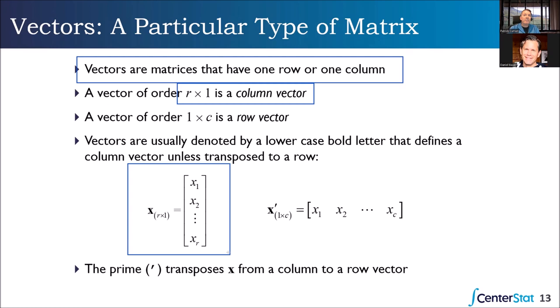Lowercase bold x indicates a column vector — multiple rows, one column. Why would you ever encounter that? Think about multiple regression: you have multiple predictors in X, so you have an n-by-p data matrix with p variables, but in multiple regression you only have one dependent variable. You need multiple rows for each person but only one column to capture that dependent variable. So our outcome in multiple regression is a vector called y. We can transpose it to get a row vector.